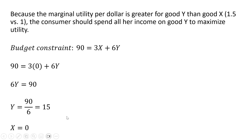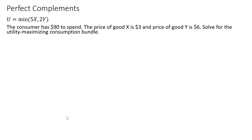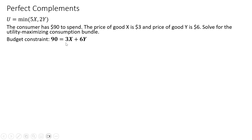Moving on to our last problem: perfect complements. Here is our perfect complements utility function — utility is the minimum of 5X or 2Y. The consumer has $90 to spend, with the same prices and income as before. Forming the budget constraint is the same as the prior two problems.